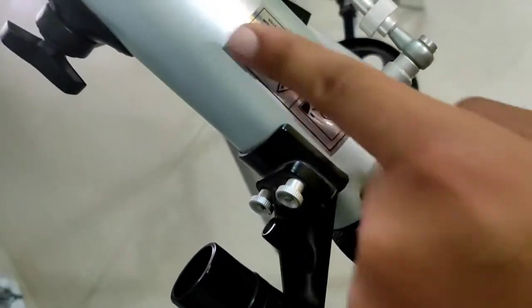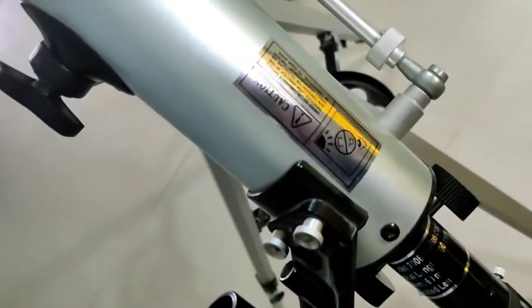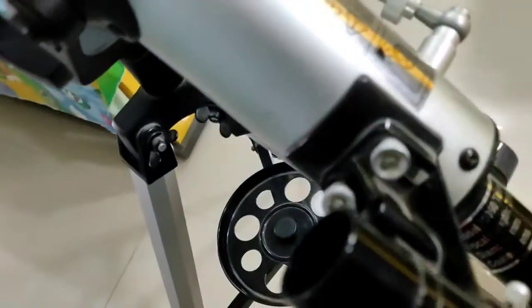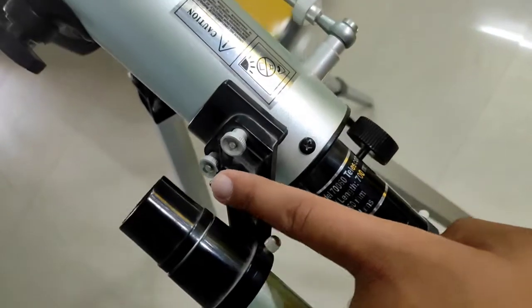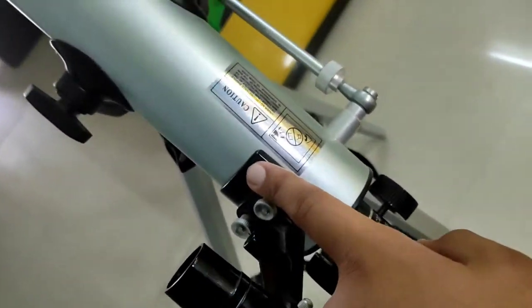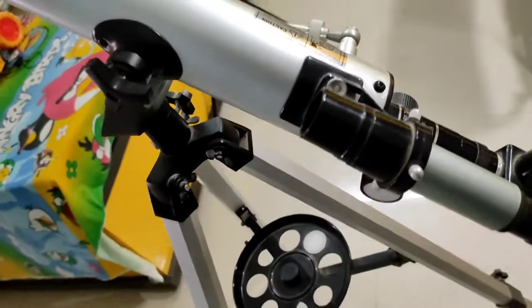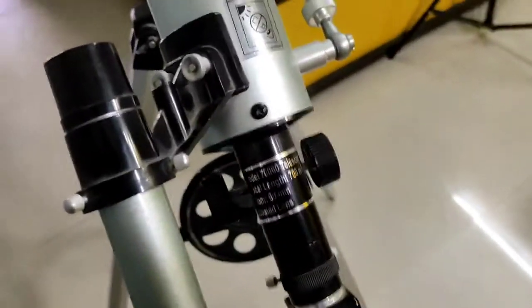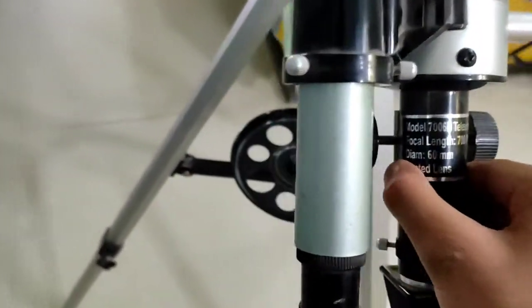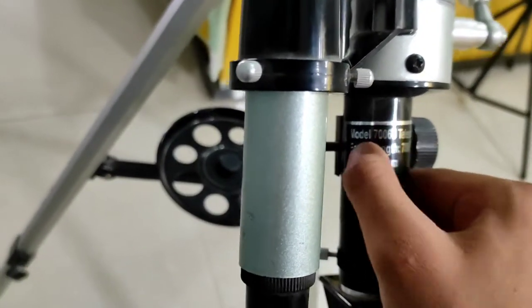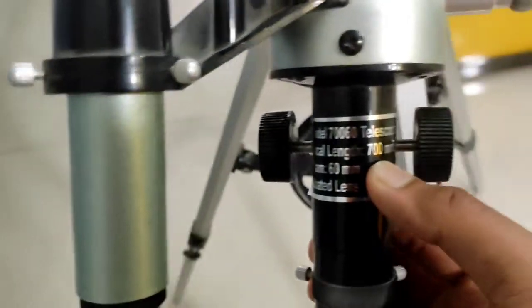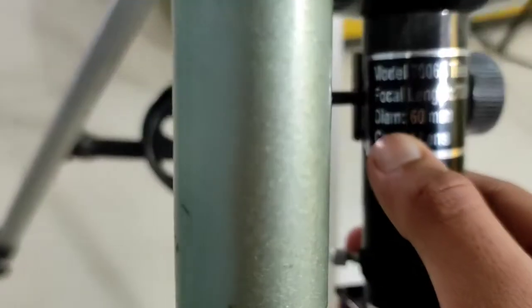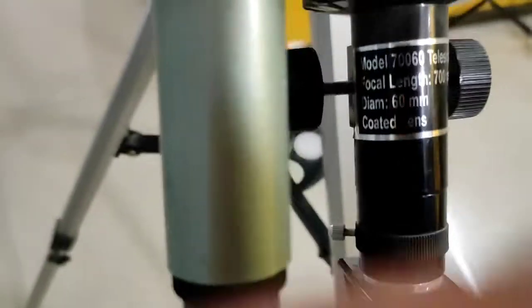This black thing is attached to the whole aluminum body of the telescope using two bolts, and it's attached in sections. If we look here, there's a sticker that says this model is 700/60 telescope, and its focal length is around 700 mm and its diameter is 60 millimeters. It has a coated lens.